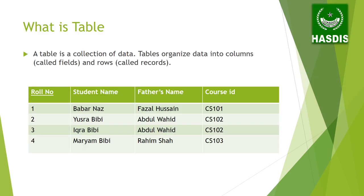A table is a collection of data. A table organizes data into columns called fields and rows called records. Basically, a table is a combination of rows and columns. We have fields such as roll number, student name, father's name, and course ID.